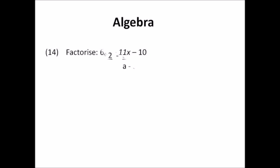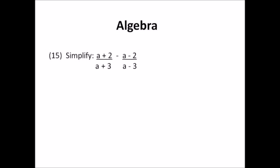Number fifteen: algebra. Simplify the algebraic fraction (a+2)/(a+3) minus (a-2)/(a-3). Your LCM is (a+3)(a-3). Use it and work it just like a normal fraction with numbers. At the end, when you simplify, your answer will be an expression. There will be a lot of algebra on the test, so you need to be comfortable using it.